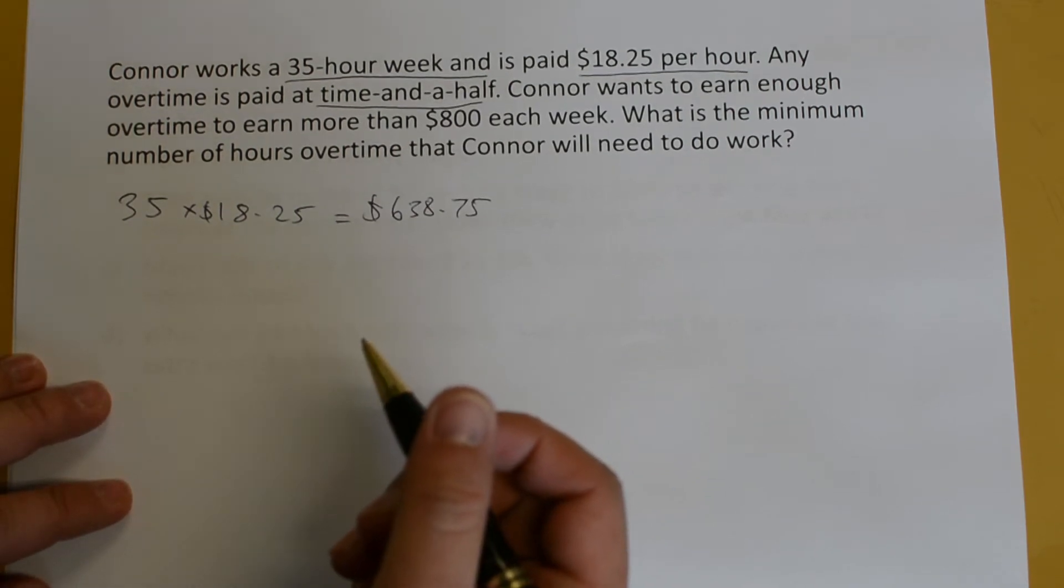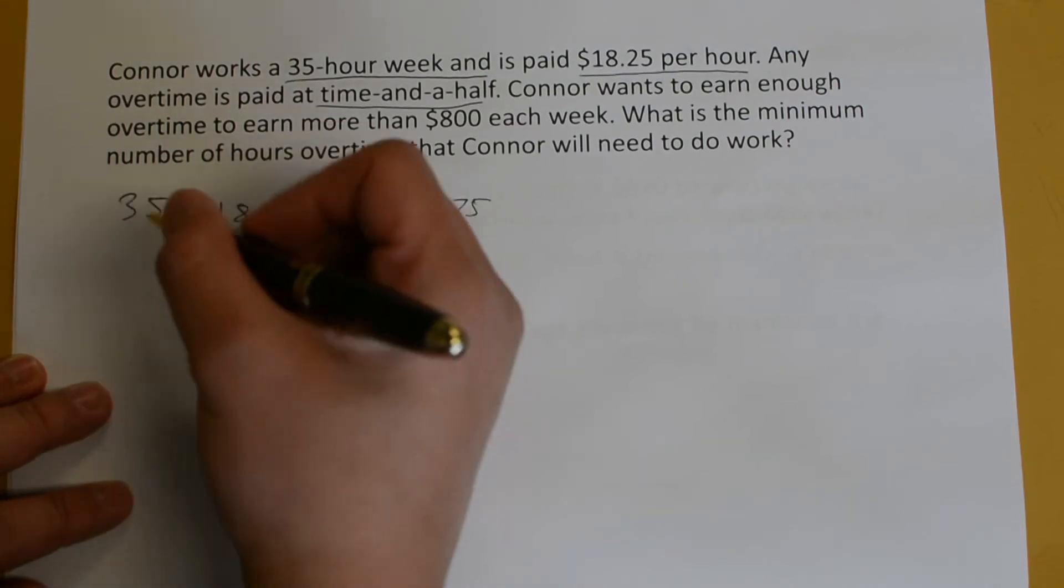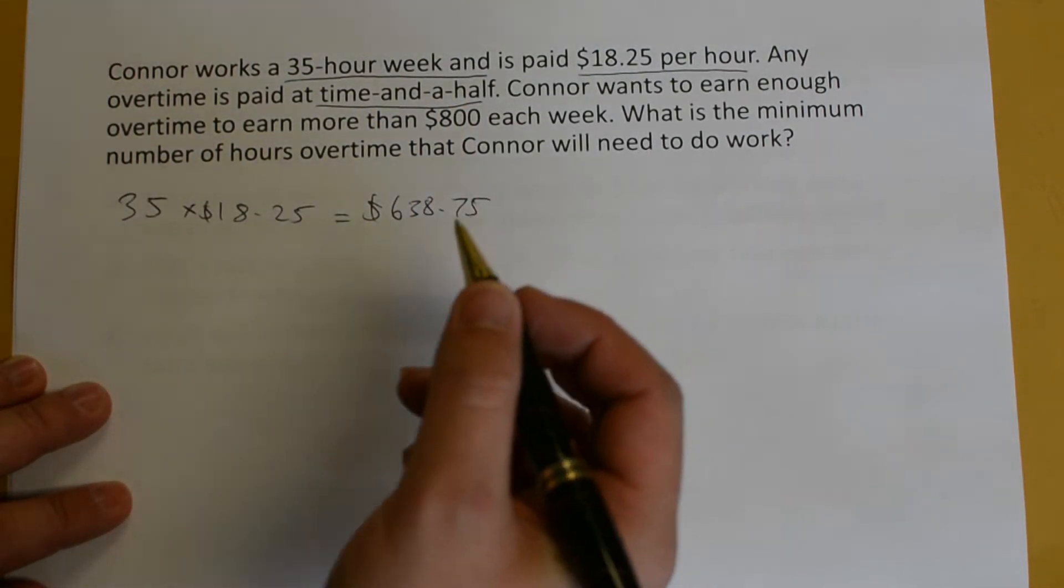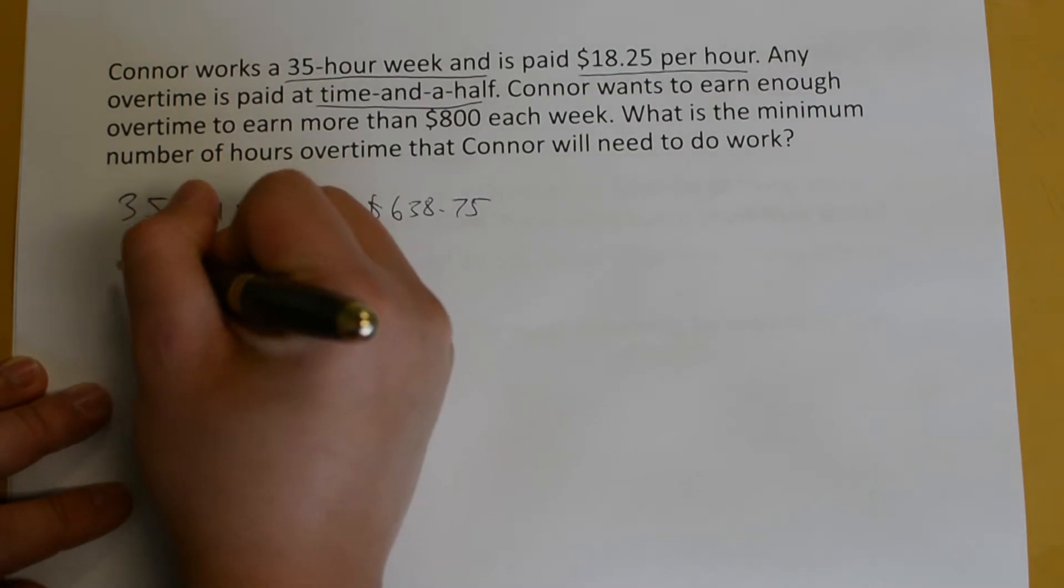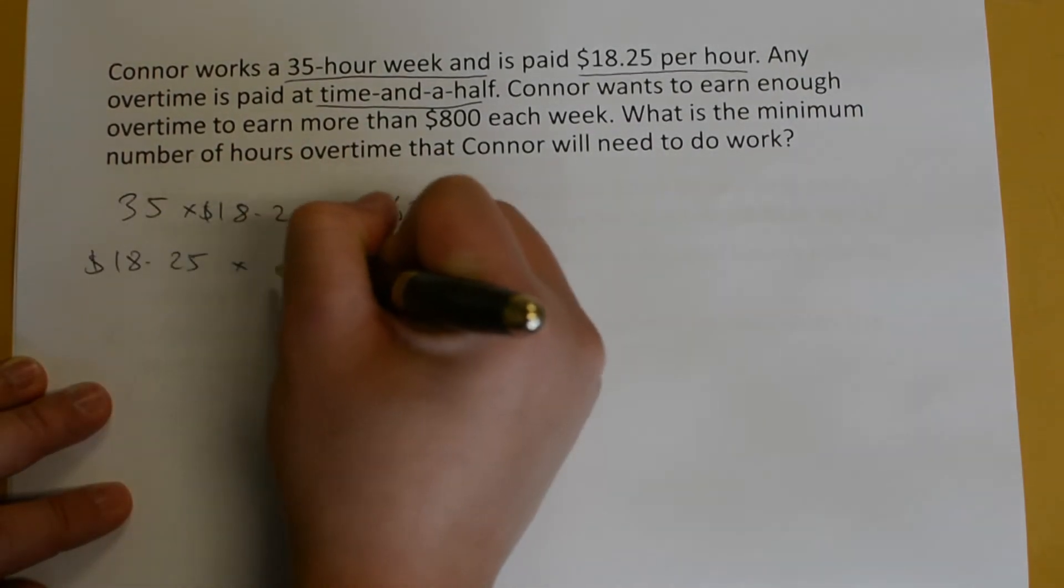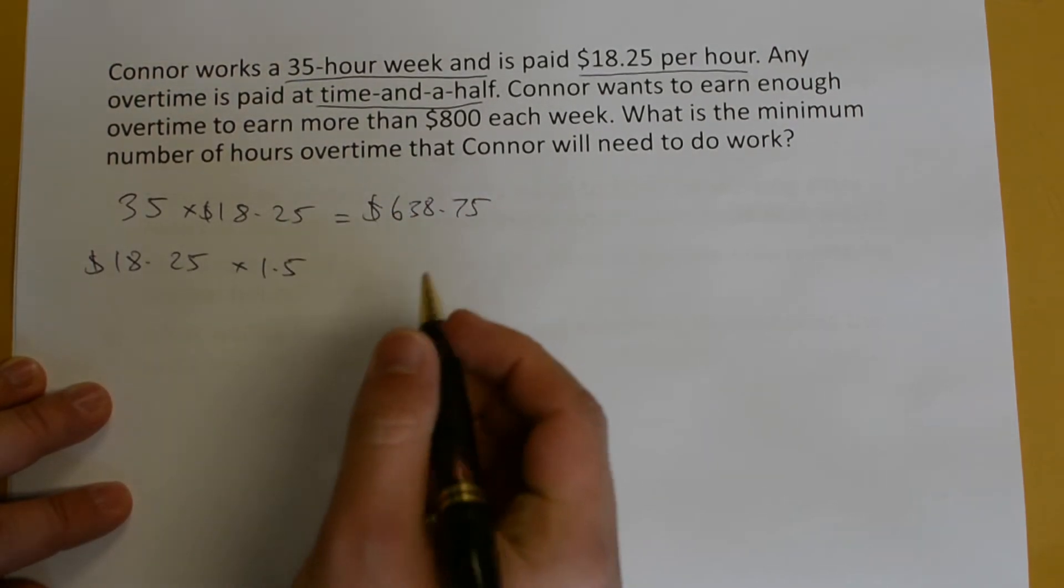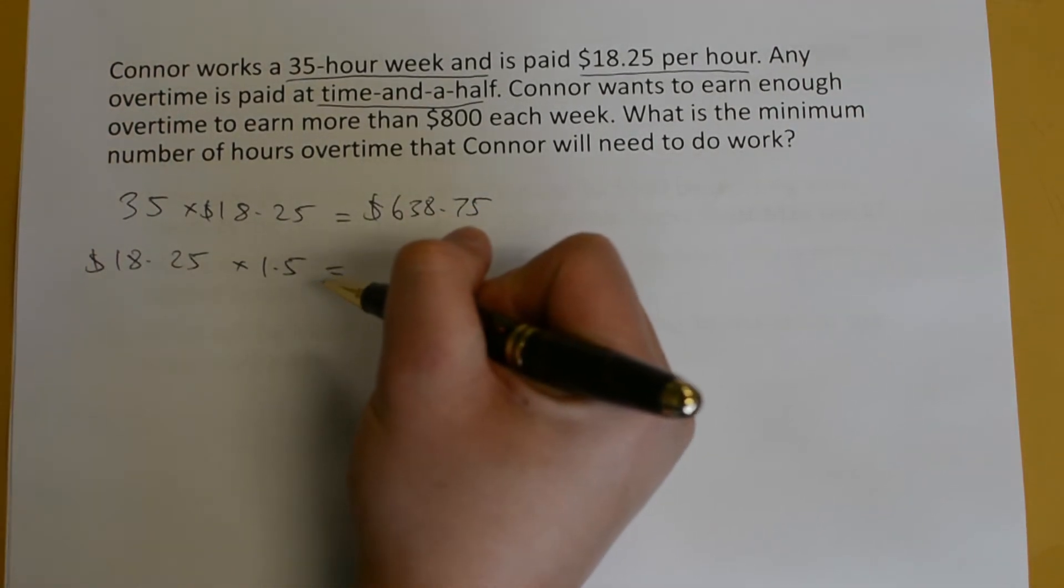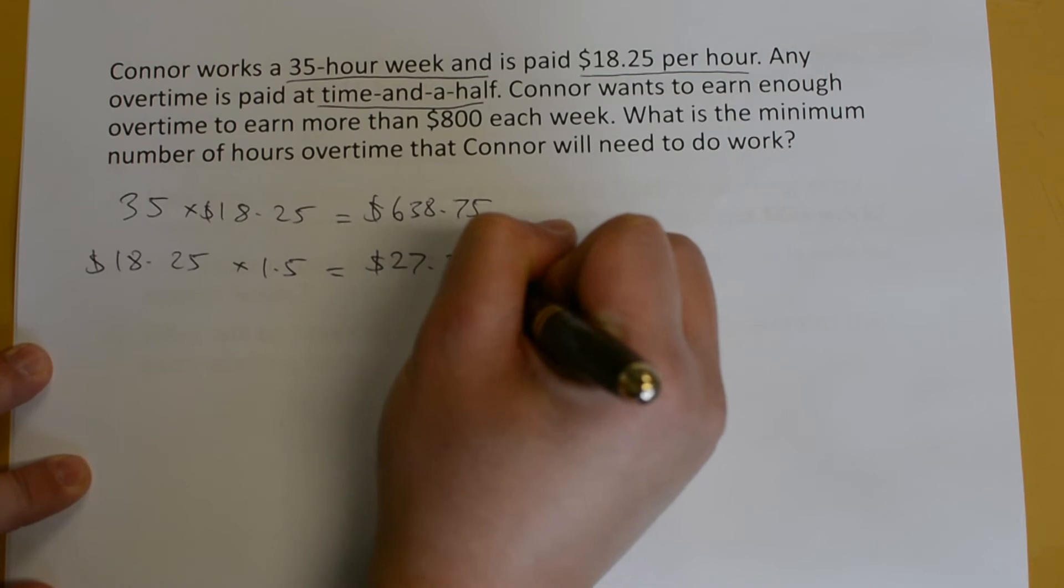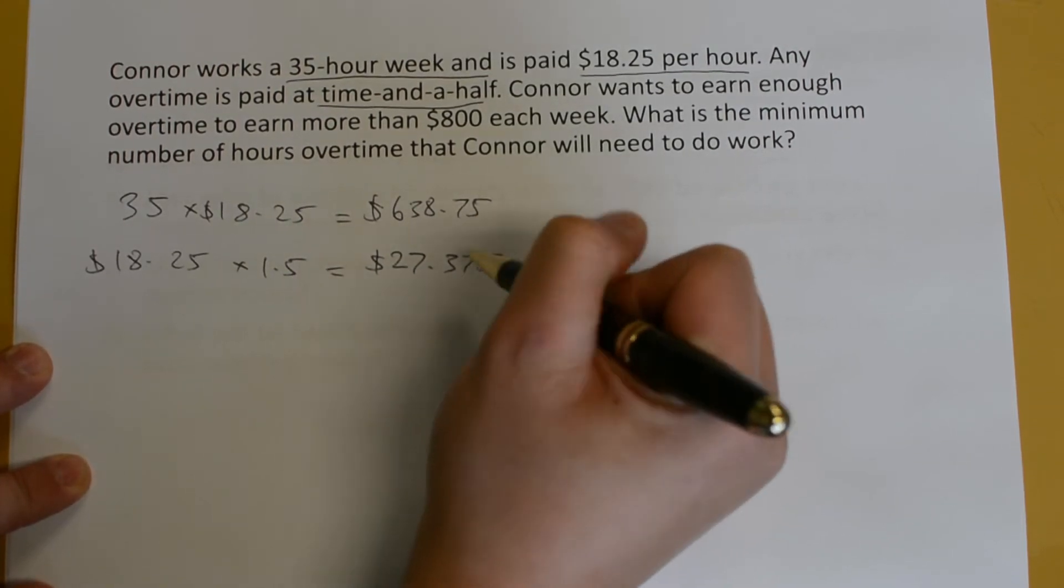Now, he wants to earn more than $800, so he must work some overtime. His overtime rate is paid at time and a half. So, we must then find out what his overtime rate is. We get his $18.25, multiply that by one and a half, and you will get exactly $27.375.